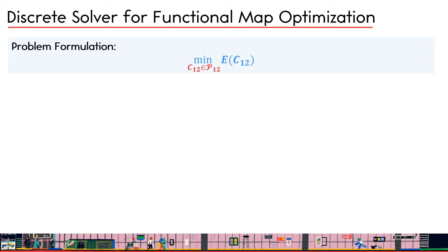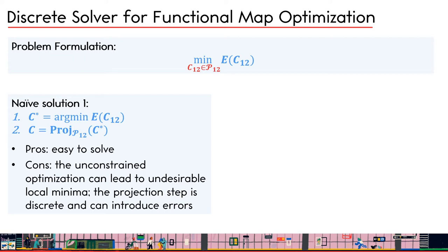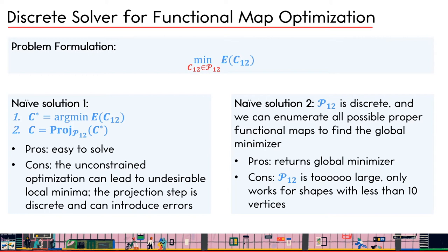We can immediately consider two naive solutions. The first is to ignore the hard constraint and then project the optimized functional map to make it proper — essentially the standard pipeline with an extra projection step. This can lead to undesirable local minima such as the zero matrix, and the projection step can introduce errors. Another naive solution is to enumerate all possible proper functional maps, but the proper functional map space is too large and exhaustive search only works for shapes with fewer than 10 vertices.